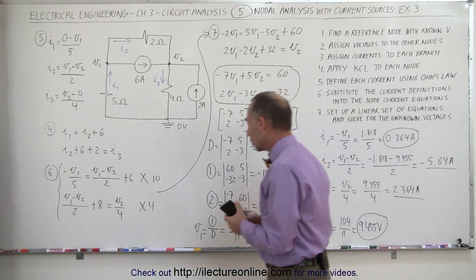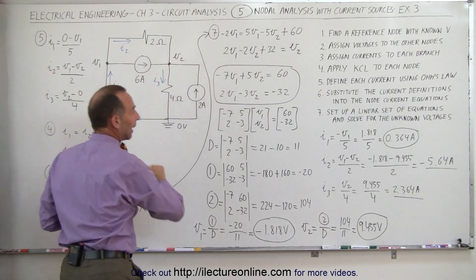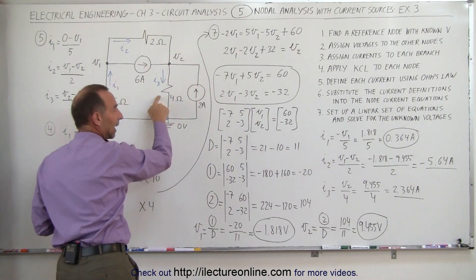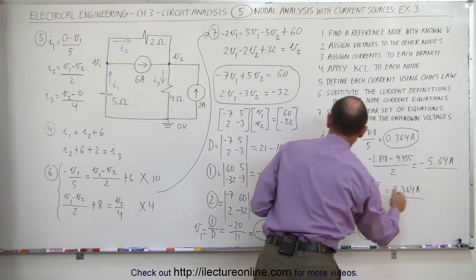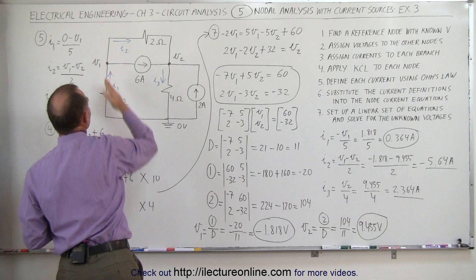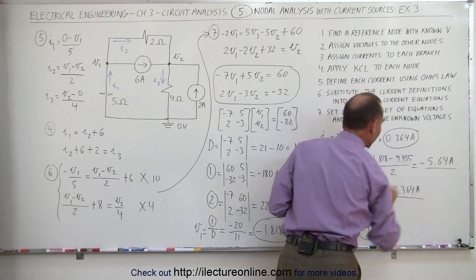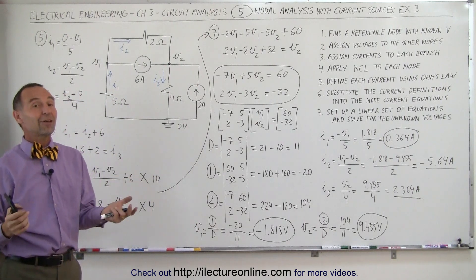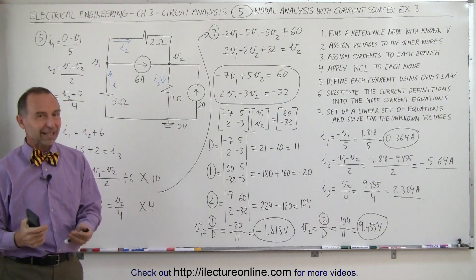So there we have all three currents. At this junction we have eight amps coming in. I2 is a minus five point six four amps, meaning I2 actually flows in the opposite direction, and I3 flows in this direction — the positive values of I2 and I3 add up to eight, which checks out. At the other junction, six amps are leaving and I2 plus I3 add up to six amps. We have all the right currents and voltages — that's how we find voltages and currents on a circuit like this with current sources using the nodal analysis method.